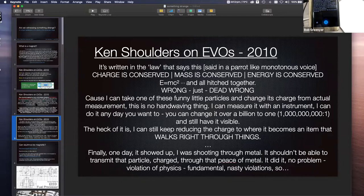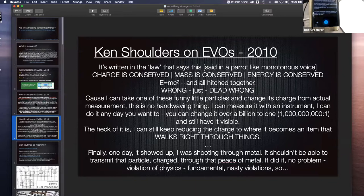It's written in the law that says this, and he says this in apparent tone. He goes, 'charge is conserved, mass is conserved, energy is conserved, E equals mc squared, and all hitched together. Wrong, just dead wrong.' Because I can take one of these funny little particles and change its charge from actual measurement. This is no hand-waving thing. I can measure it with an instrument. I can do it any day you want to. You can change it over a billion to one and still have it visible. The heck of it is, I can still keep reducing the charge to where it becomes an item that walks right through things. Finally, one day, it showed up I was shooting through metal. It shouldn't be able to transmit that particle charged through a piece of metal. It did it. No problem. Violation of physics. Fundamental, nasty violation.